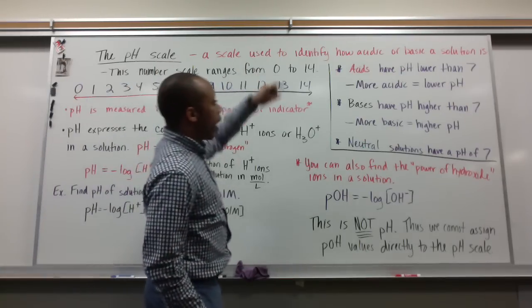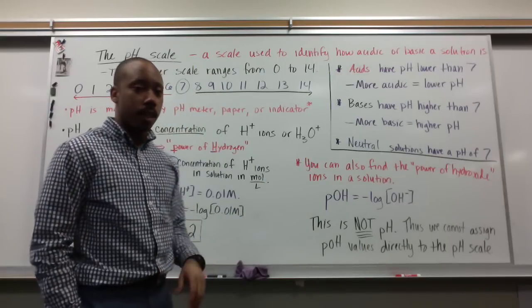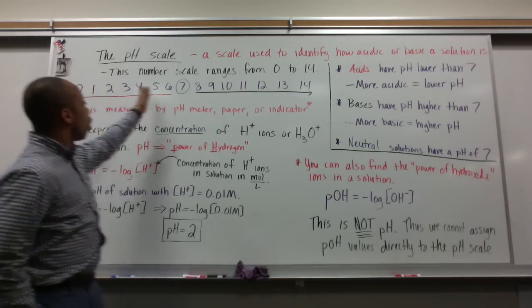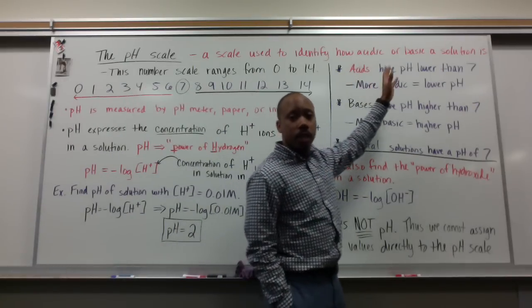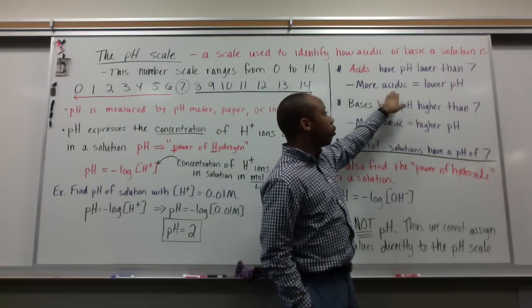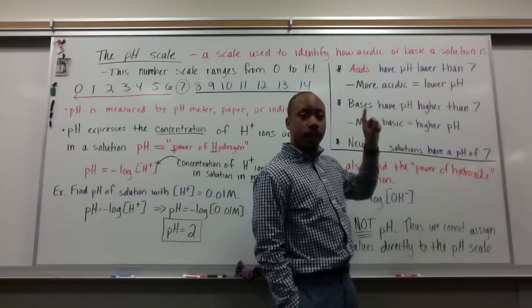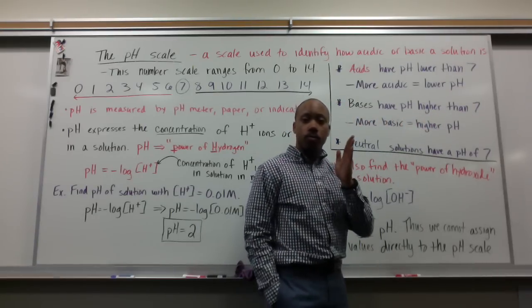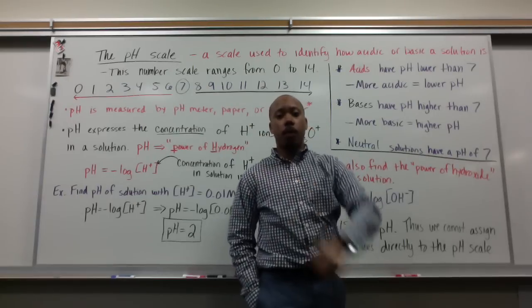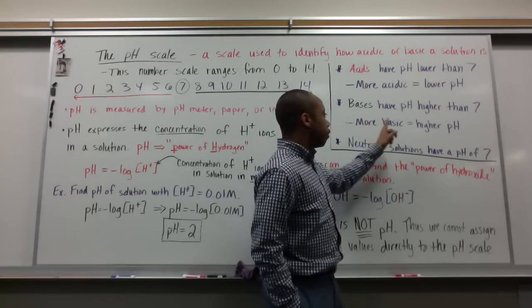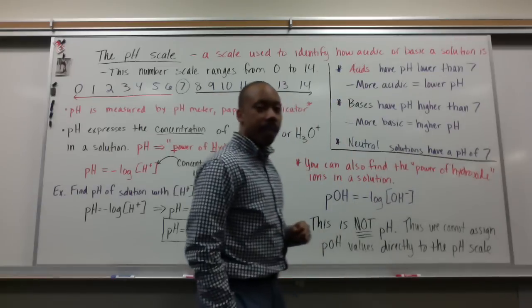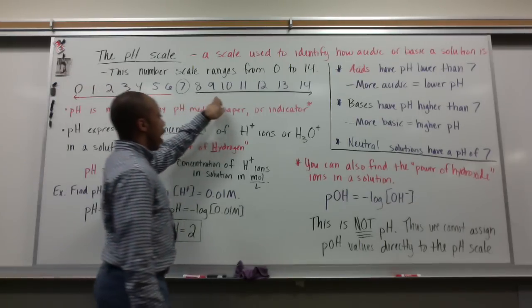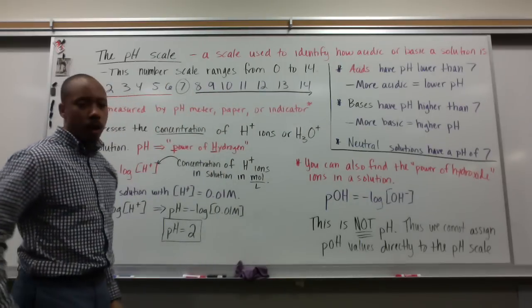The pH scale is a scale used to identify how acidic or basic a solution is. This scale ranges from 0 to 14. Acids have a pH lower than 7 - the more acidic you are, the lower your pH, closer to 0. Basics have a pH higher than 7, from beyond 7 upward to 14, becoming more basic with higher pH. Neutral solutions have a pH of 7.